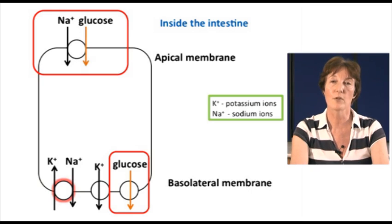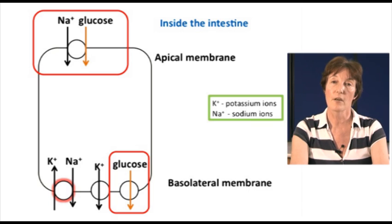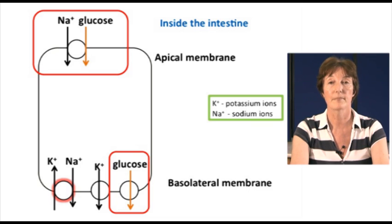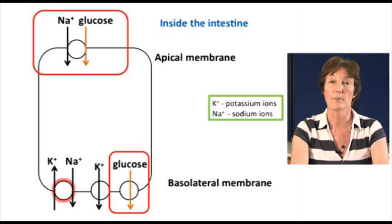Glucose is transported into the enterocyte cell across the apical membrane by a symporter, which also transports sodium ions. So when sodium ions are transported into the cell, glucose is transported in at the same time. The glucose then leaves the cell via the basolateral membrane by facilitated diffusion, using a glucose transporter protein, and enters the bloodstream.